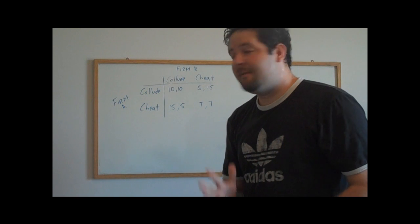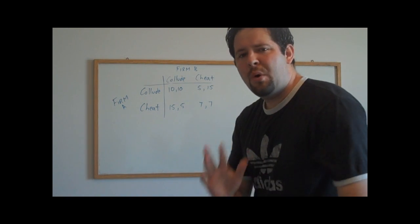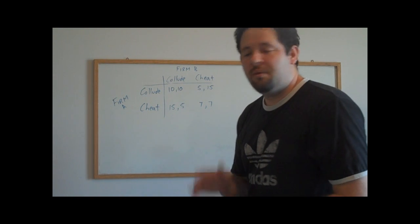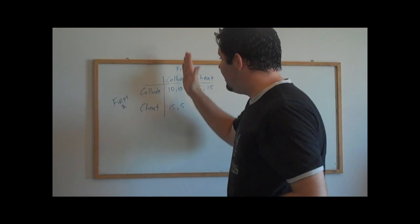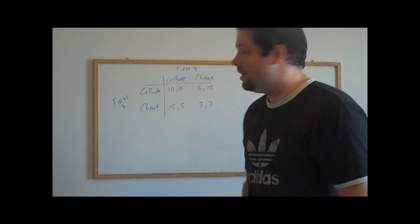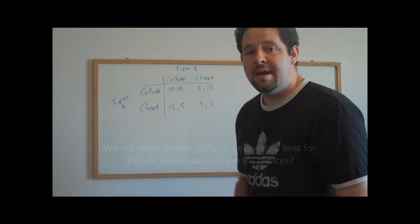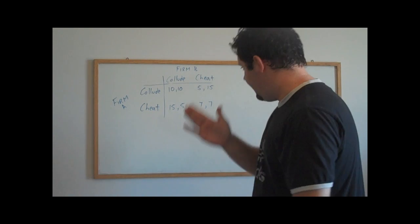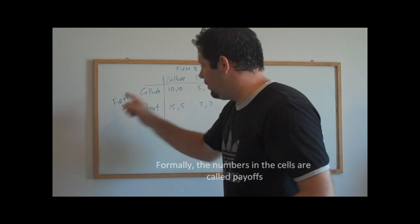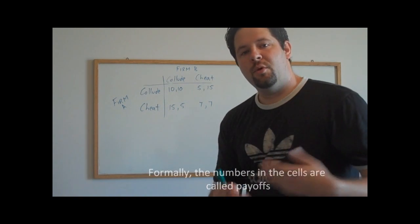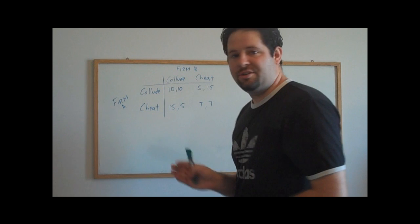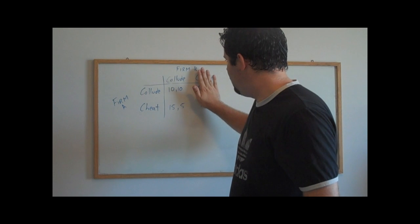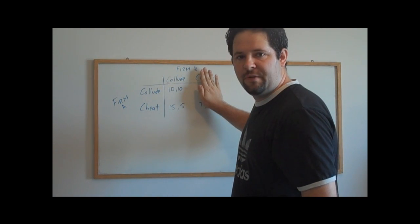What we have to do to specify the equilibrium strategies is we have to put ourselves in the shoes of each of the individual players of this game. So, imagine that we are firm A. I could imagine that firm B will collude, and then I can ask, well, given that, what should I do? And then the second part is, imagine that firm B will cheat on the agreement, and then given that, what should I do? Now, the numbers in these boxes, the first one belongs to firm A, and the second one belongs to firm B. So, when we're analyzing firm A's decision, we're going to look at the first numbers in the boxes. So, let's look at, given that firm B colludes, what should firm A do?